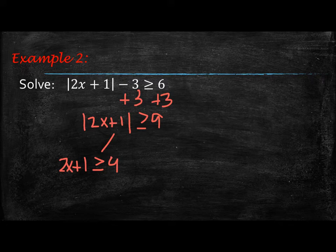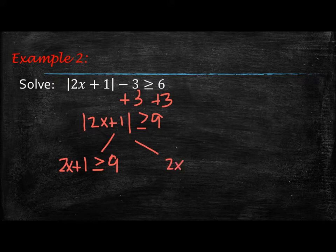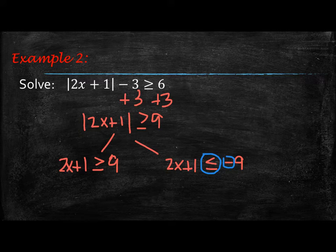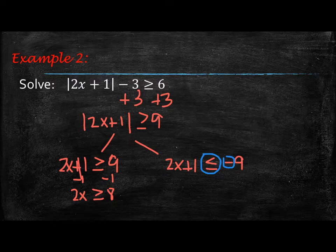When we flip it to negative 9, we write 2x plus 1 with a less than or equal to negative 9, because you flip the inequality when you make it a negative number. Continuing to solve on the left side, we subtract 1 to get 2x is greater than or equal to 8, then divide by 2 to get x is greater than or equal to 4.